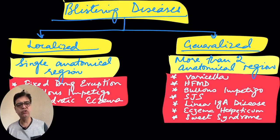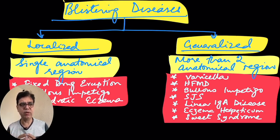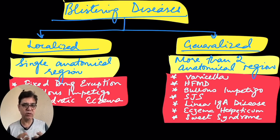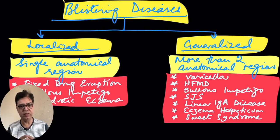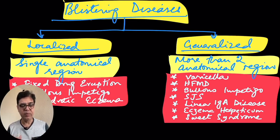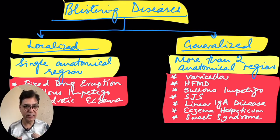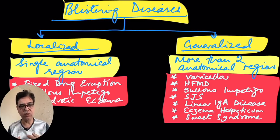Another variant of blistering disorder is Stevens-Johnson syndrome, or erythema multiforme major. This usually occurs as an immune-mediated reaction and can be triggered by certain infections like Mycoplasma pneumoniae, or by drugs such as certain anticonvulsants or sulfonamides. It is known as multiforme because there are so many different types of lesions — papules, macules, vesicles, bullae — and the hallmark is target lesions: some lesions resemble a bull's-eye and are found here and there on the skin.